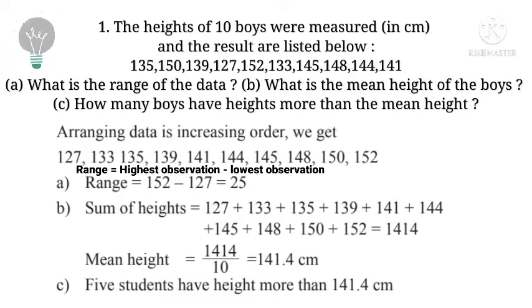Arranging data in ascending order, we get 127, 133, 135, 139, 141, 144, 145, 148, 150, 152. Range equals highest observation minus lowest observation. Highest observation is 152, lowest observation is 127, so the range is 25 cm.